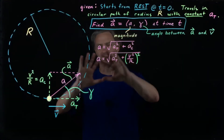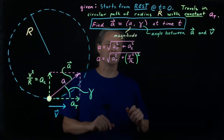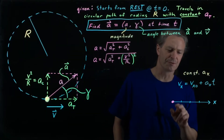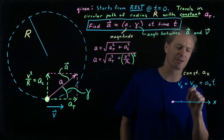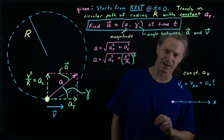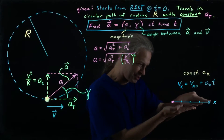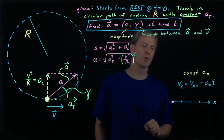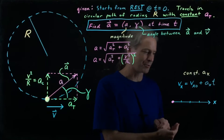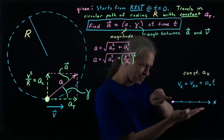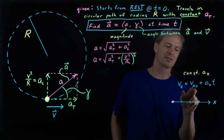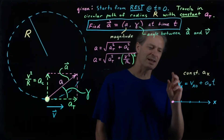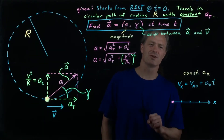Let's consider the velocity as a function of time in the case of a constant acceleration component. Generally speaking, v sub x equals v sub x zero plus a sub x times t is true for the x component of multidimensional motion, provided the x component of the acceleration is constant. When applied to straight line motion along an x axis, v sub x, v sub x zero, and a sub x are all tangential quantities. So that suggests we could change the x subscript to a tangential subscript.